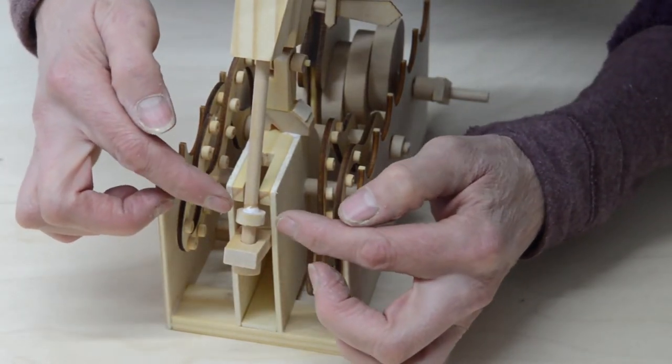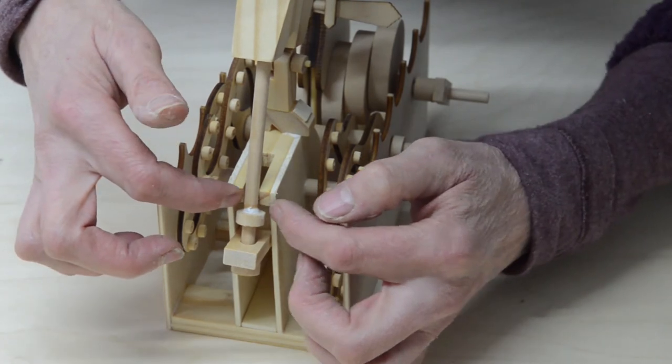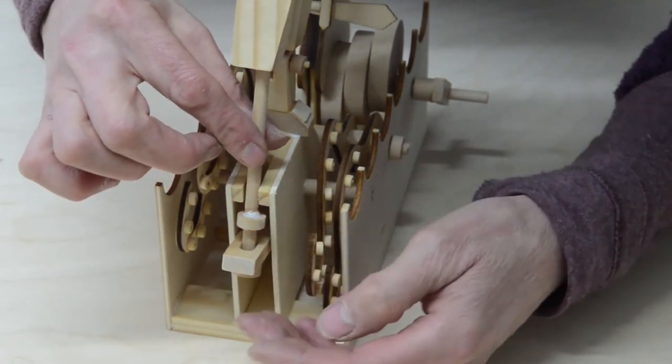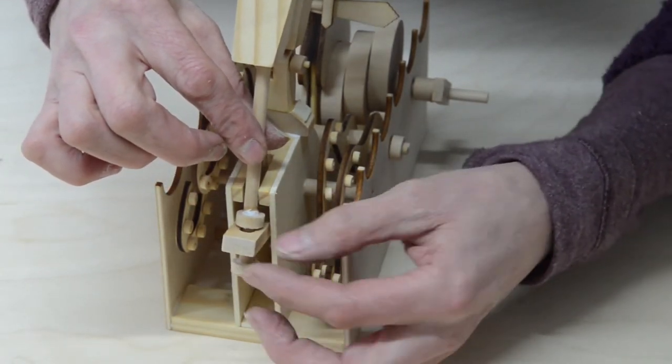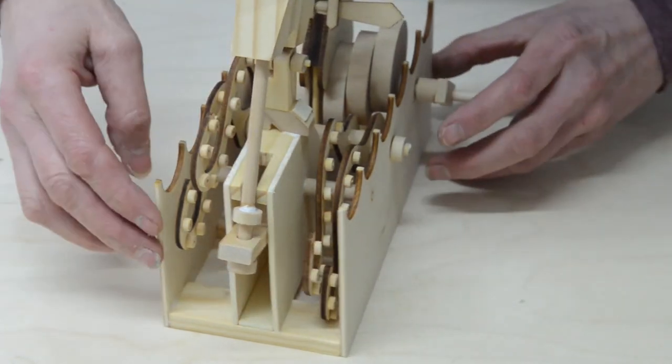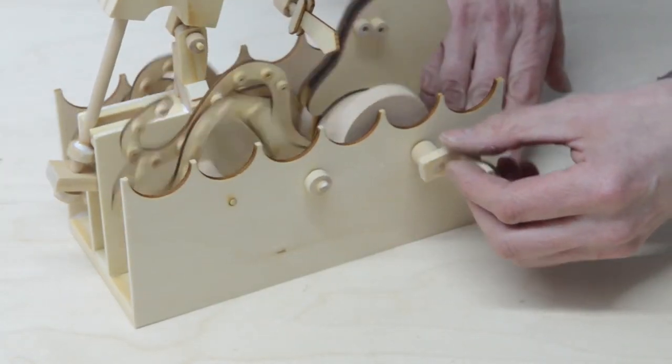The very last point is this spacer. Just make sure you don't glue it too high so it hits the underside of there. Then glue this one underneath. Then you turn the handle.